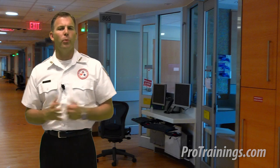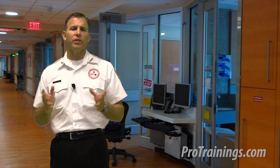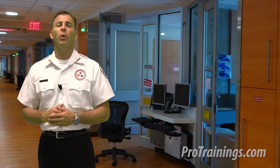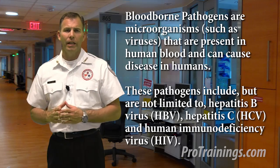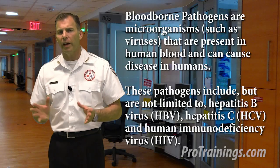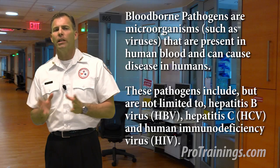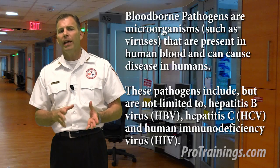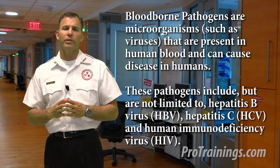You might be asking yourself, how are bloodborne pathogens and infectious diseases spread? First, let's look at what a bloodborne pathogen is. It's a microorganism, such as a virus, that is present in human blood and can cause disease in humans.